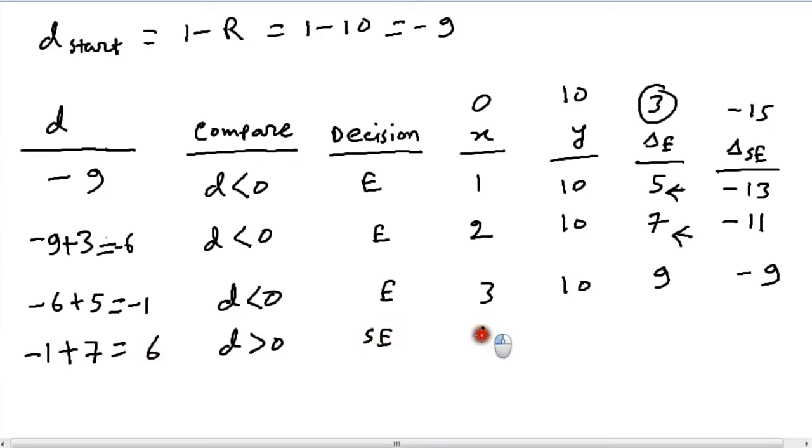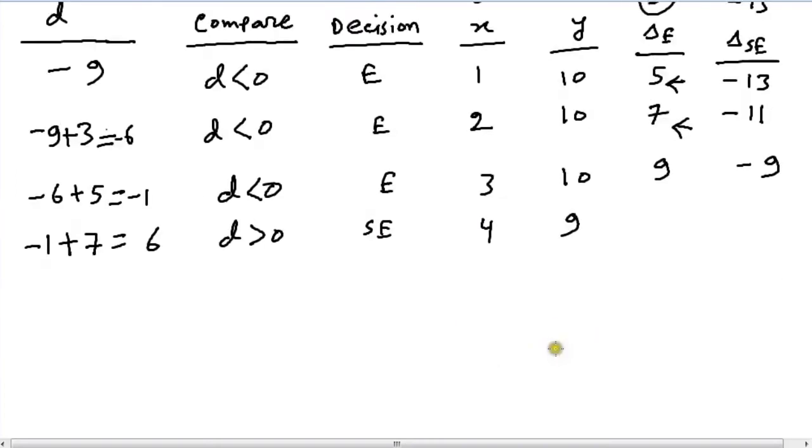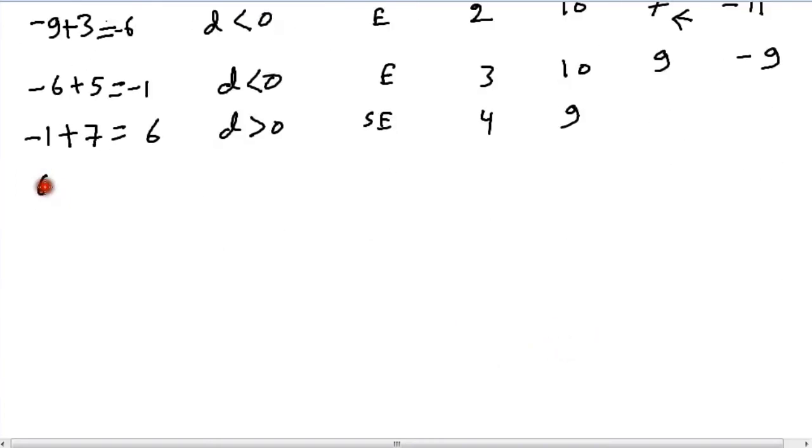So x becomes 4 (3 + 1), y goes down by 1 to 9. Our next d would become 6 + del_se which is -9 right here, so 6 + (-9) which would give us -3.